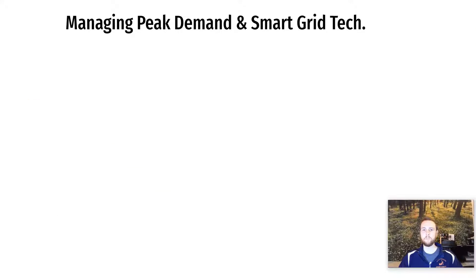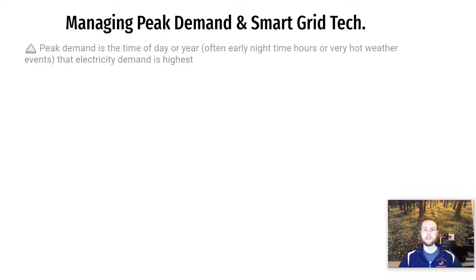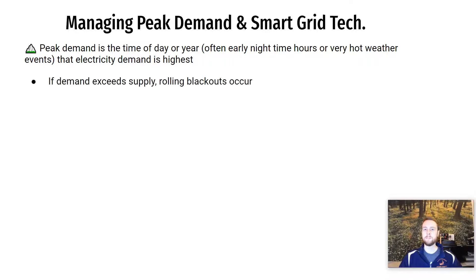The last topic is peak electricity demand and how to manage it with a variable price system. At certain times of day — typically at night when people get home, power on their devices, lights flip on, and solar electricity goes offline — there is a peak demand. It can also occur during hot weather events when air conditioning units are cranked up. This is a problem because if demand exceeds the electricity that can be supplied by the utility, there will be rolling blackouts.